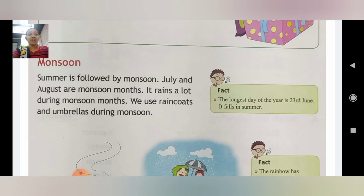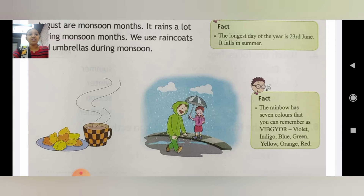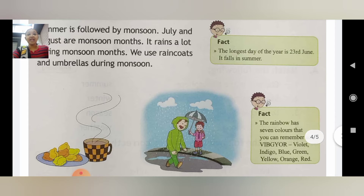Fact: the longest day of the year is 23rd June, and it falls in summer. Second fact: the rainbow has seven colors, which you can remember as VIBGYOR — Violet, Indigo, Blue, Green, Yellow, Orange, and Red. Monsoon mein sab chai ke saath pakode khaate hain, aur bheegne se bachne ke liye raincoat aur umbrella use karte hain.